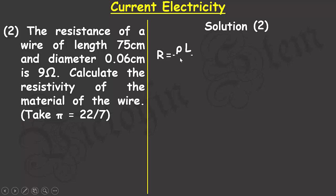Using the same resistivity equation — resistance is proportional to the product of the resistivity and the length, and inversely proportional to the cross-sectional area — in this problem the length is given as 75 centimeters.